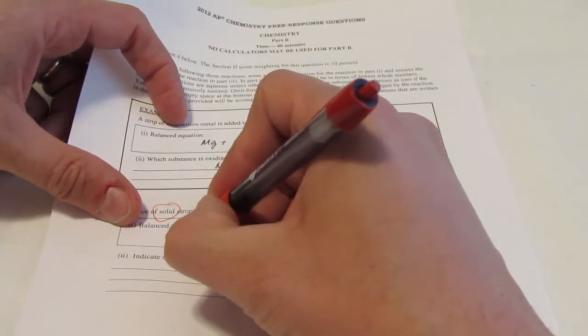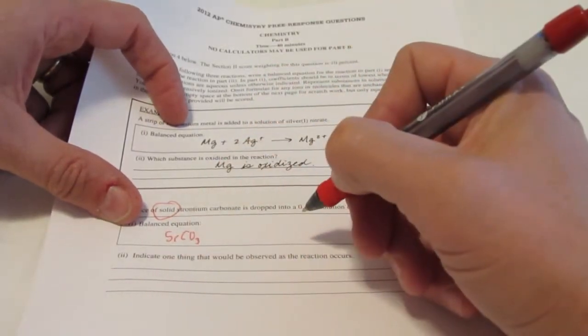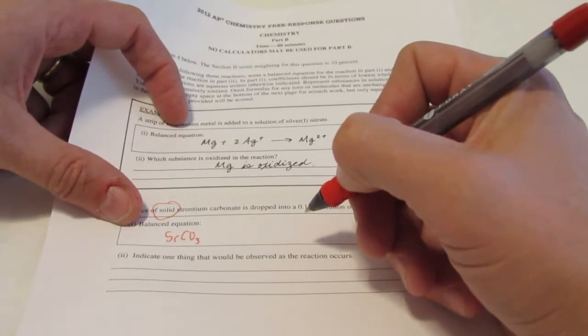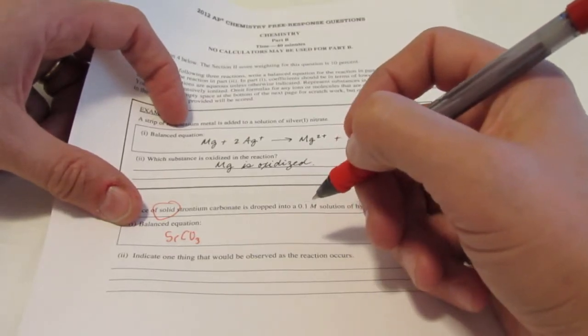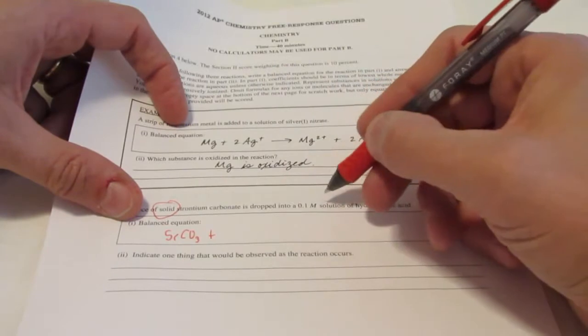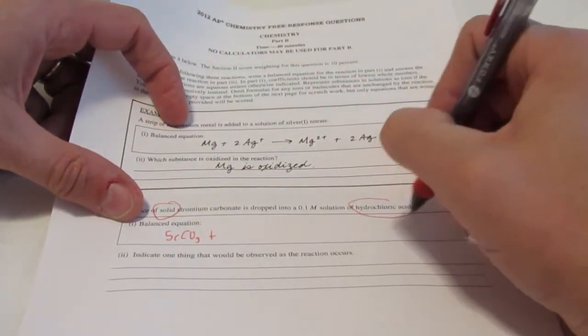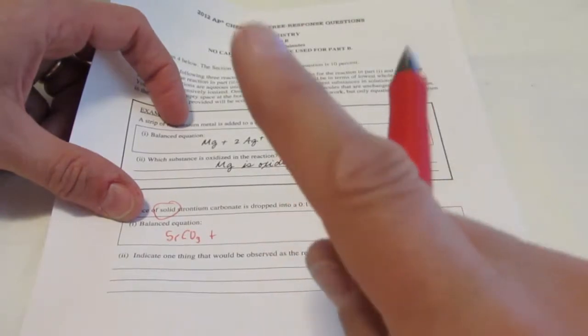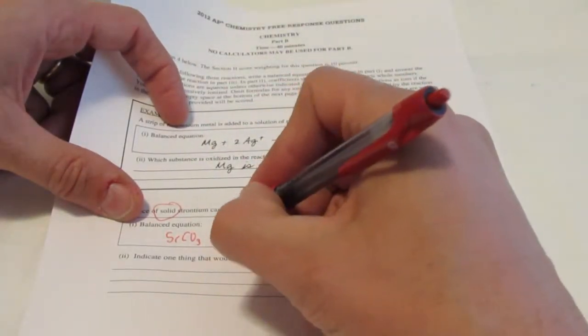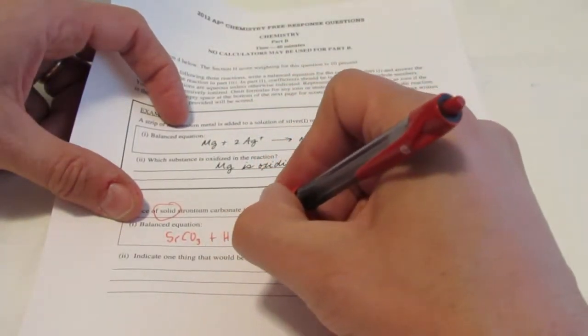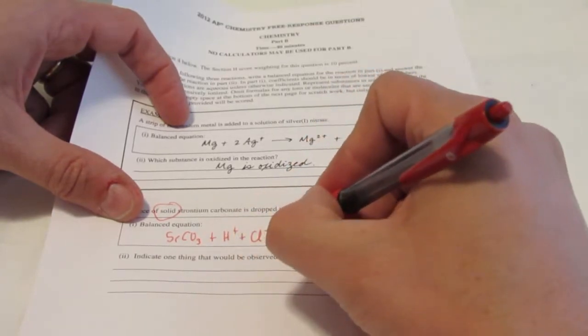They're giving you a little hint here that they don't want that dissociated. Not that you would have anyway, because you folks know your solubility rules and carbonates are insoluble except for group one and ammonium. So strontium, you would have expected to stick together anyway. Let's go ahead and write that down. Strontium is two plus, carbonate is two negative, so SrCO3 is our first reactant. It's being dropped into a 0.1 molar solution of hydrochloric acid. That's a strong acid. Remember to dissociate your strong acids and bases. So I'm going to dissociate that into H+ and Cl-.